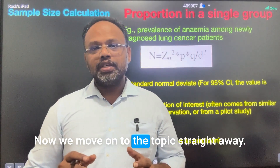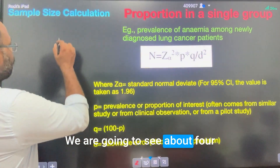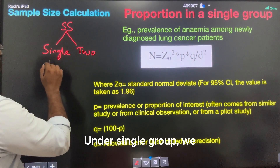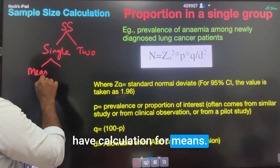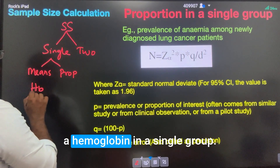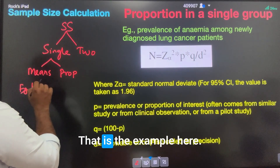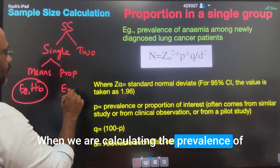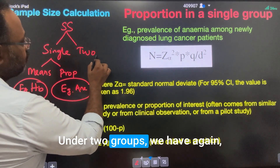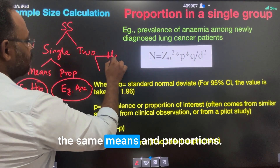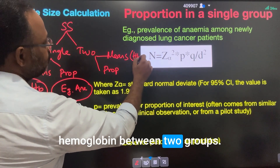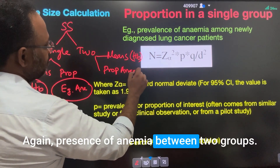We are going to see four types of sample size calculations — for single group and for two groups. Under single group, we have calculation for means and for proportions. For example, estimating hemoglobin in a single group falls under means, and calculating prevalence of anemia falls under proportions. Under two groups, we again have means — comparing hemoglobin between two groups — and proportions — comparing prevalence of anemia between two groups.